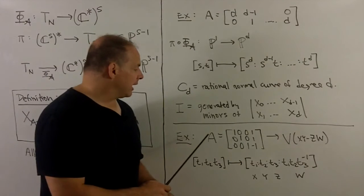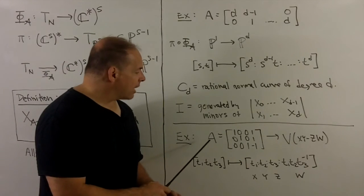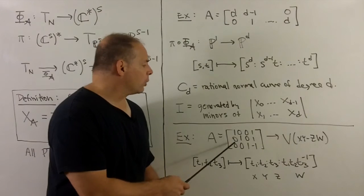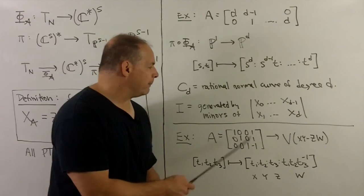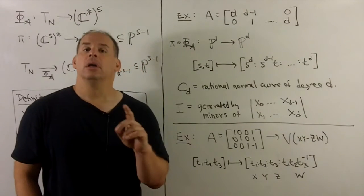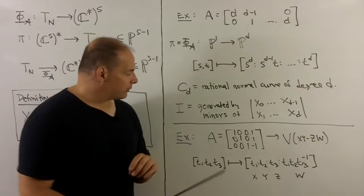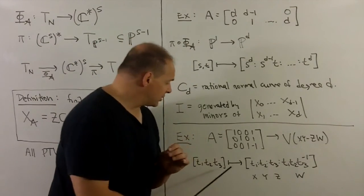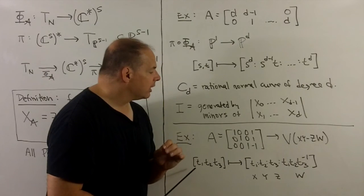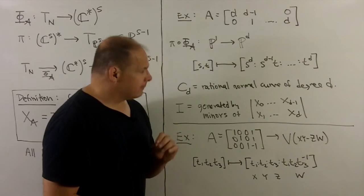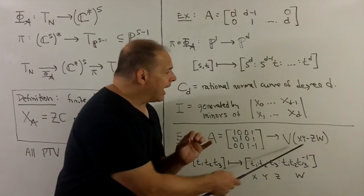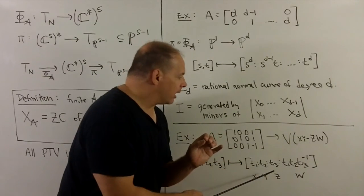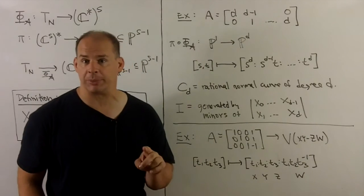Another example: take character matrix A equal to the columns (1,0,0), (0,1,0), (0,0,1), (1,1,-1). We take those characters from the affine case and pass to projective classes on both sides. This gives us the projective toric variety defined by the zero set of XY - ZW in projective three-space.